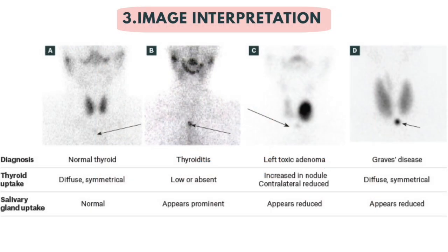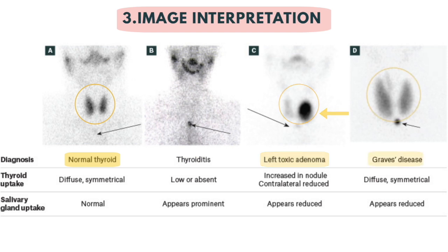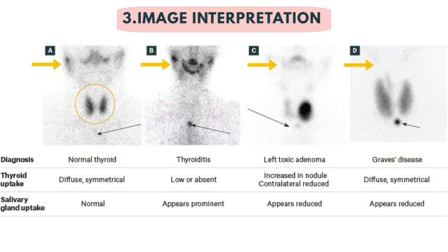Tracer uptake is usually low or absent in thyroiditis. Autonomously functioning nodules appear as focal areas of increased uptake, and Graves' disease presents as diffuse and symmetrical uptake throughout both lobes. Salivary glands are visible in the upper neck of each figure, but are seen only faintly in panels C and D as a result of the relative intensity of uptake in the thyroid gland.